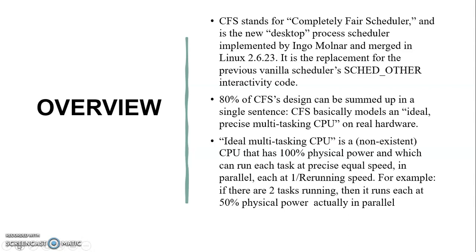The design of the Completely Fair Scheduler can be summed up in a single sentence: CFS basically models an ideal precise multitasking CPU on real hardware. An ideal multitasking CPU is a non-existent CPU that has 100% physical power and can run each task at precise equal speed in parallel. For example, if there are two tasks running, it runs each at 50% physical power, in parallel.